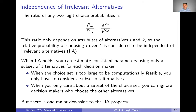Nothing about the rest of the choice set. We say that this relative probability is independent of irrelevant alternatives. When we're thinking about this comparison between I and K, the only thing that enters the ratio is I and K — there are no other alternatives. They're irrelevant, so this comparison is independent of irrelevant alternatives.